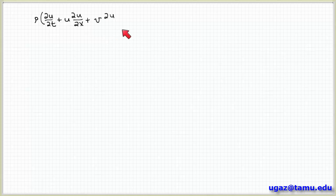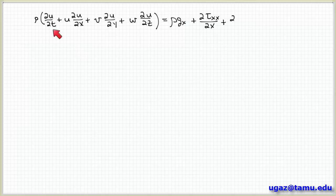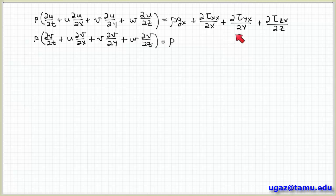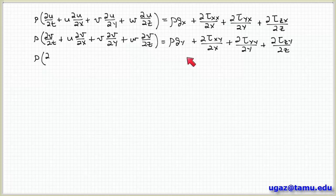Moving the flow terms to the left-hand side, the X component equation becomes: rho times the quantity (partial of u with respect to t, plus u partial of u with respect to x, plus v partial of u with respect to y, plus w partial of u with respect to z) equals rho g_x plus the divergence of the shear stress components tau acting in the x-direction. We similarly obtain corresponding equations for the Y and Z components.